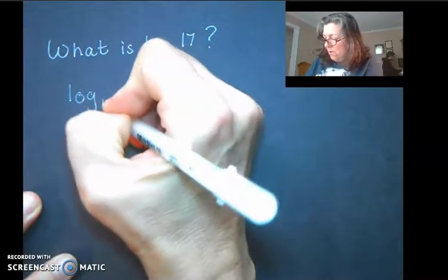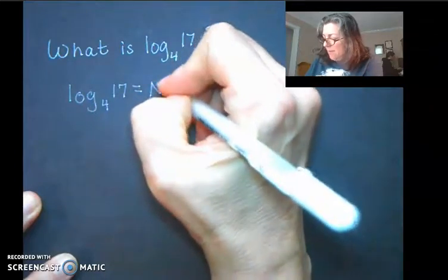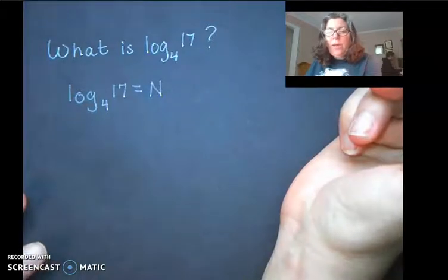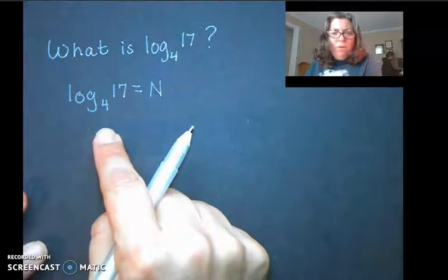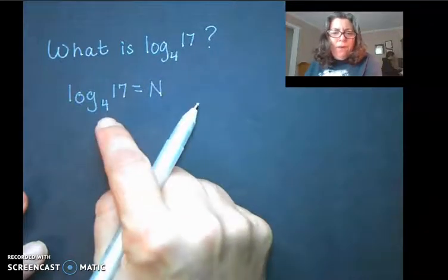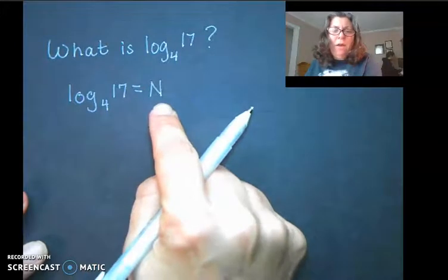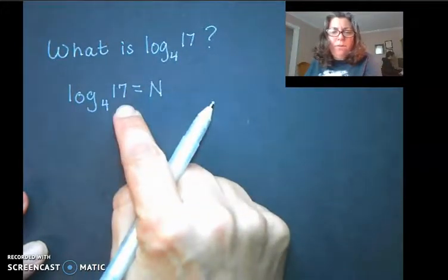And they're like, oh yeah, a logarithm is the inverse of an exponential. So if I divide 4 repeatedly into 17, I can get this. This becomes my power of 4 that creates 17.